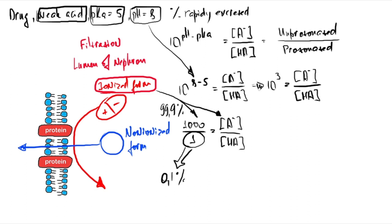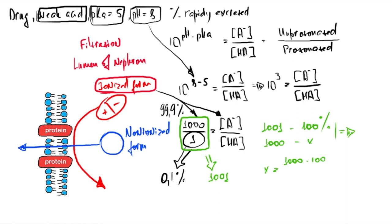To calculate: total drug (ionized + non-ionized) equals 1001 parts. So 1001 parts = 100% and 1000 = X. Therefore X = (1000 × 100) / 1001, which equals 99.9%. Third example: Ampicillin is a weak acid with pKa of 2.5.